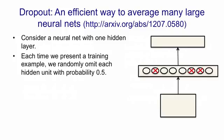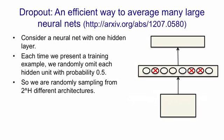And we run the example through the net with those hidden units absent. What this means is we're randomly sampling from 2 to the H architectures, where H is the number of hidden units. It's a huge number of architectures. Of course, all of these architectures share weights.